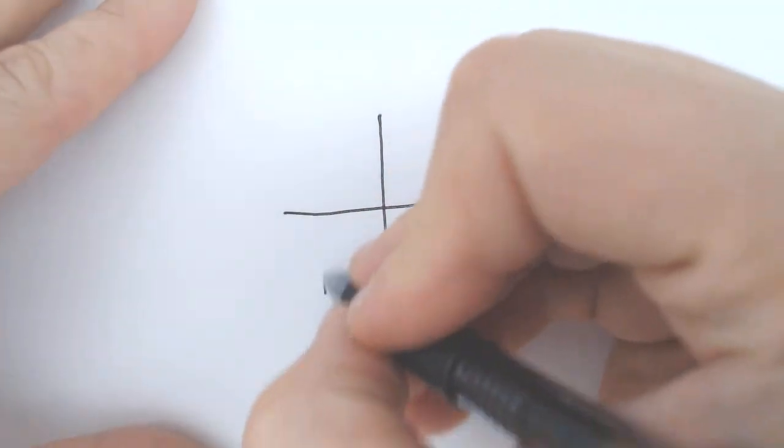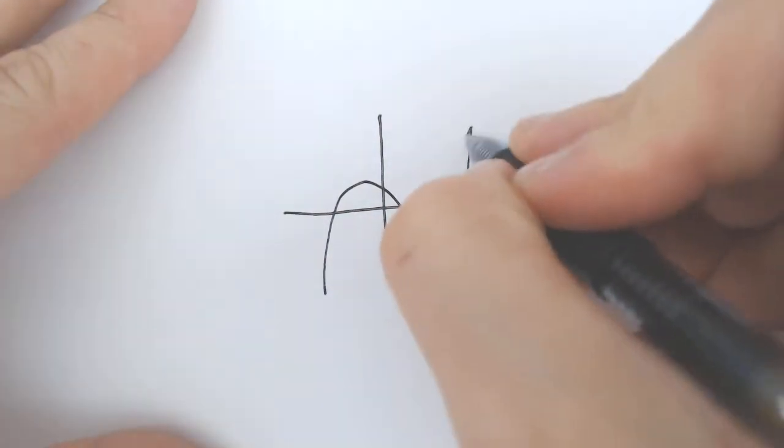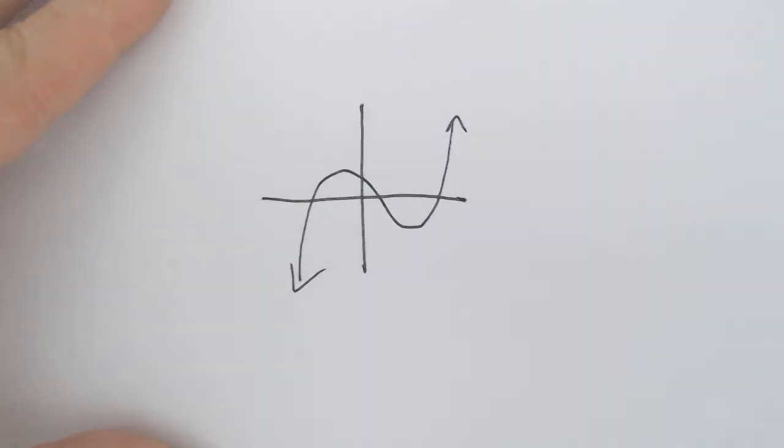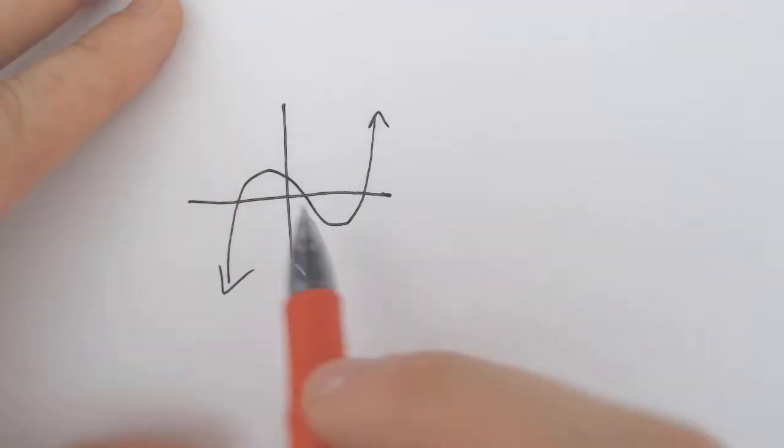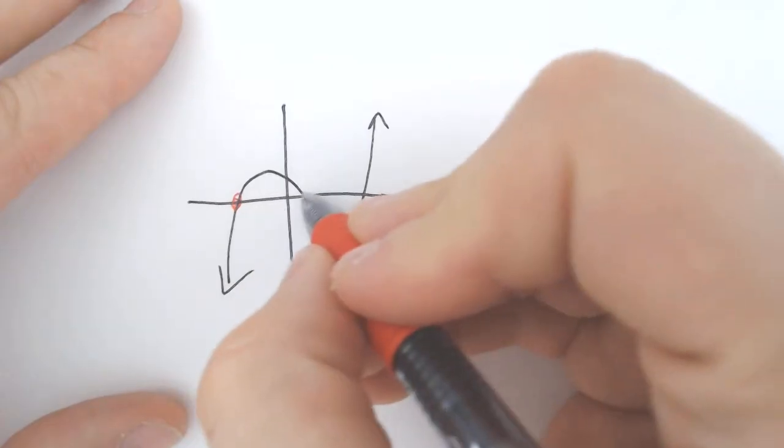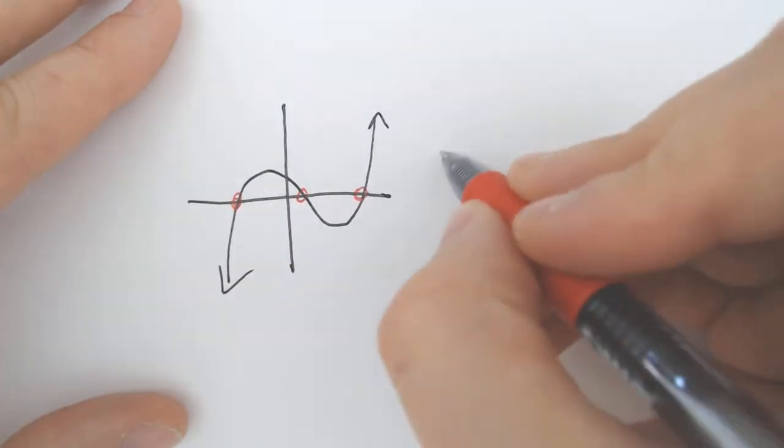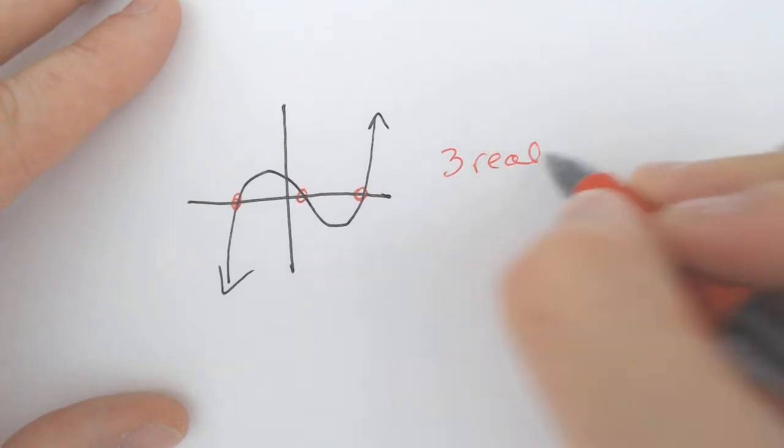Hello, and welcome back to another episode of Math with Sohn. Today, we're going to be looking at graphs and determining how many real and imaginary zeros we have from that graph. So not actually finding them, just how many real versus how many imaginary we have. Now, everywhere it crosses an x-axis, that counts as three real zeros.